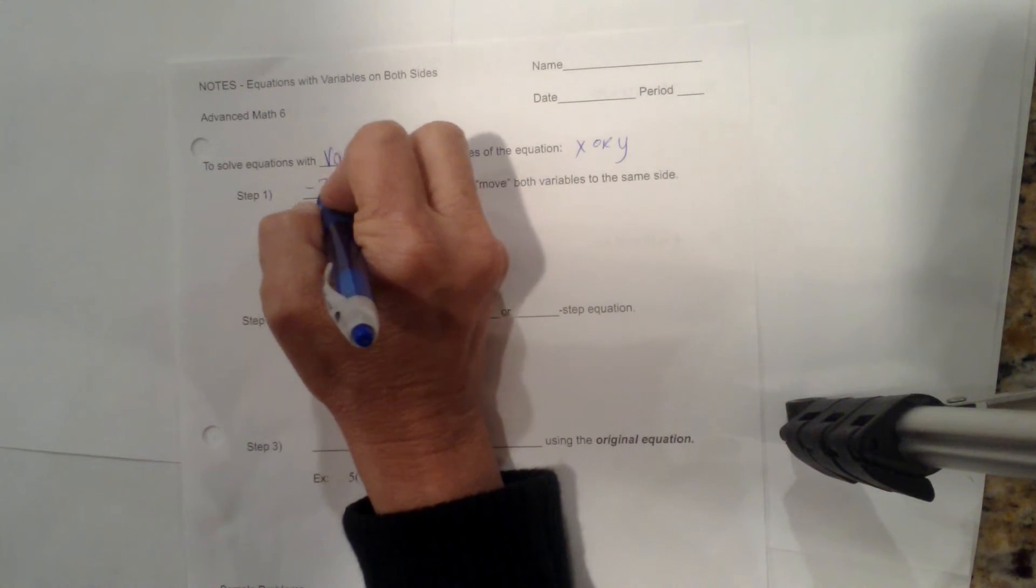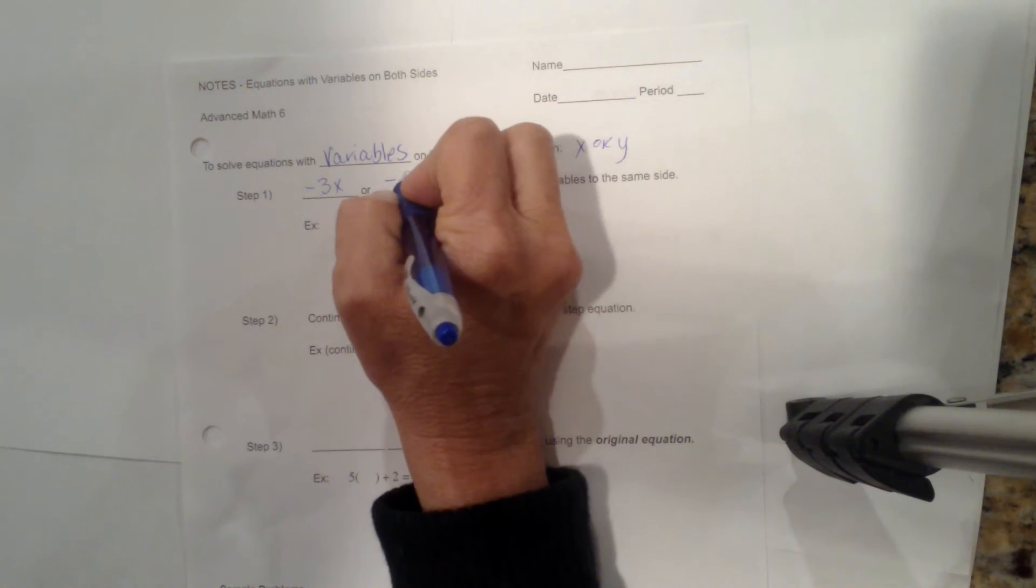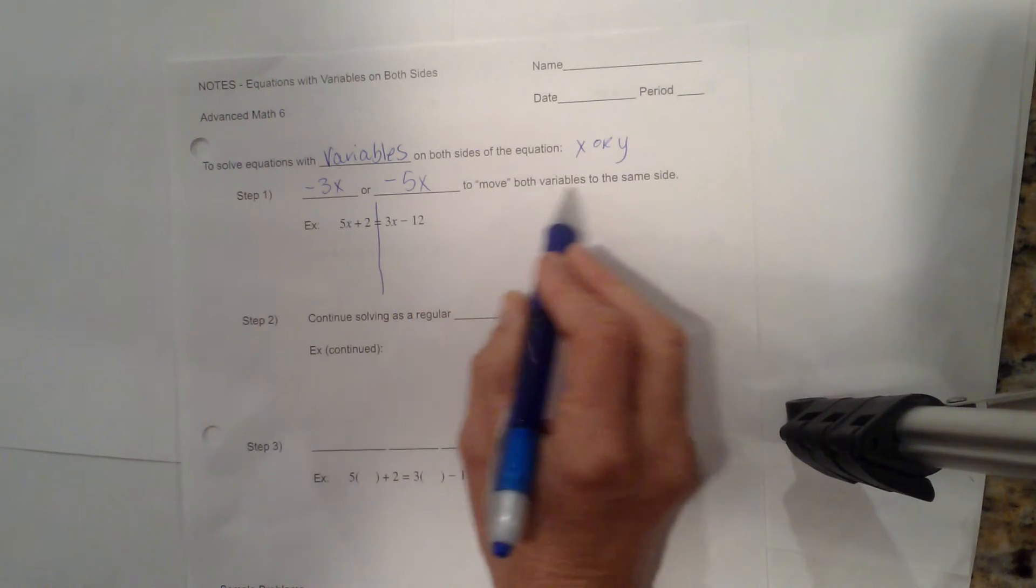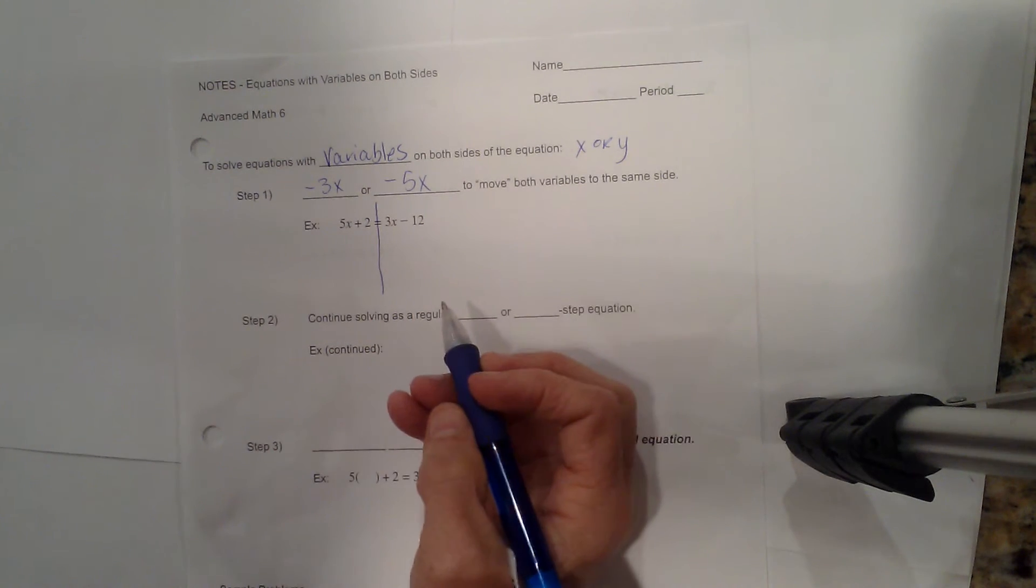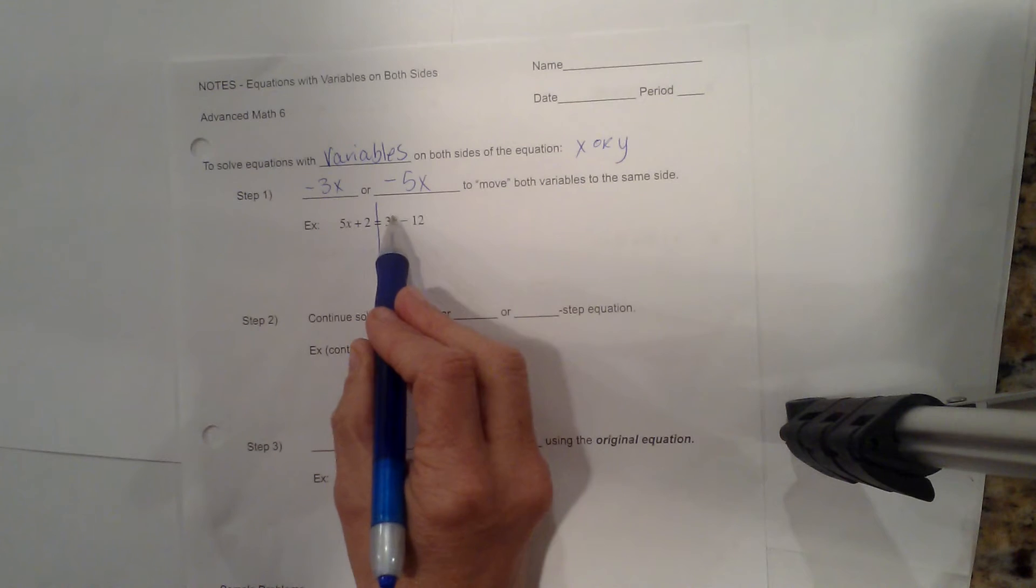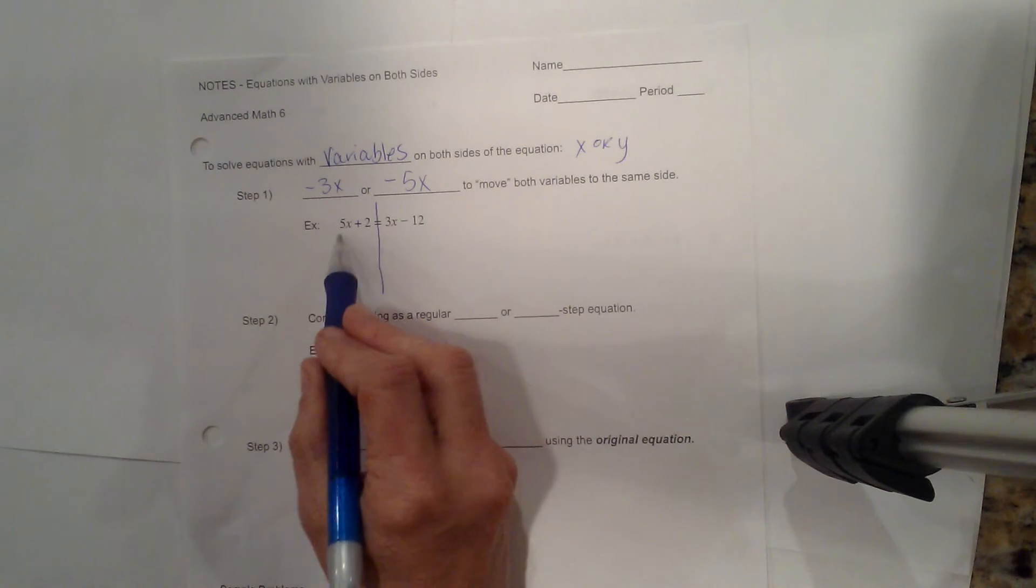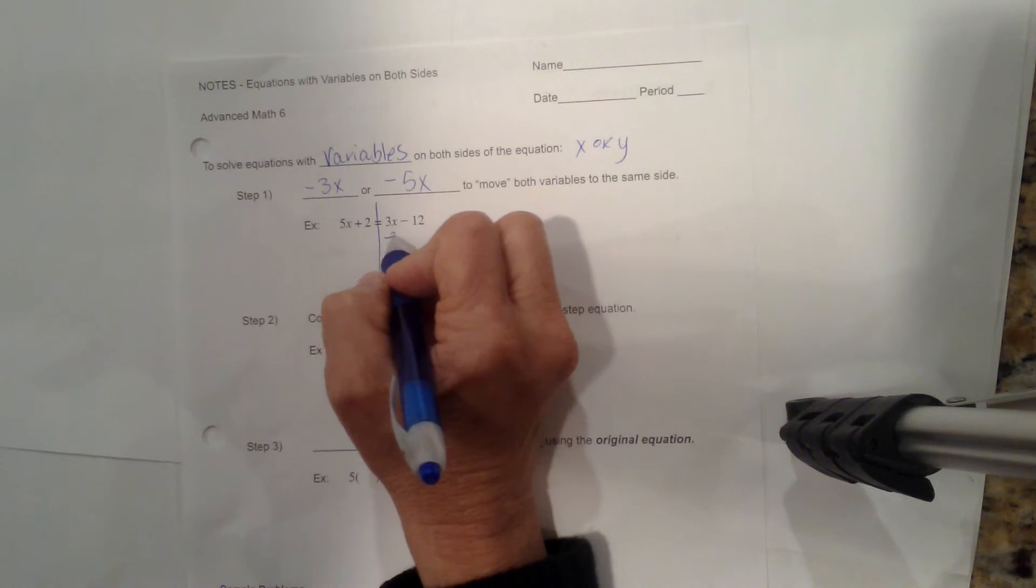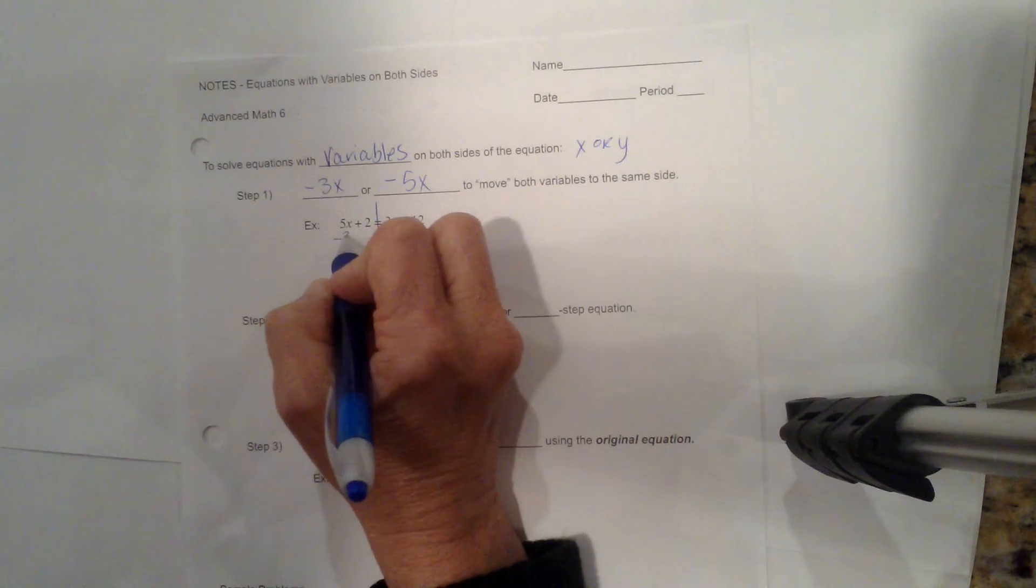So I can subtract 3x or subtract 5x to move the variables to both sides. I like to keep my variable positive so I usually take the smaller one, so this is 3x and I move it over to the 5x. That way I keep my variable positive.